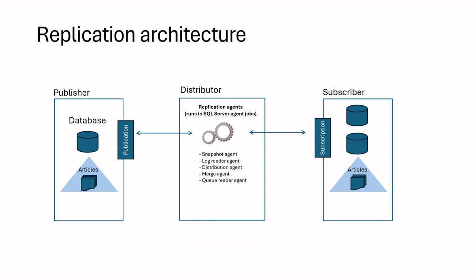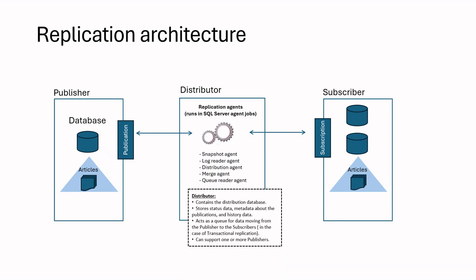Distributor is another server which contains the distribution database. It stores status data, metadata about publications, and history data. It acts as a queue for data movement from publisher to subscriber, and also it can support one or more publishers.